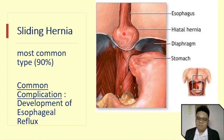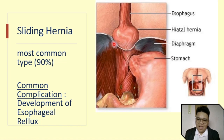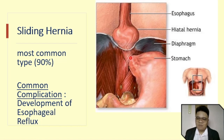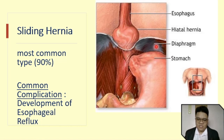The common complication for sliding hernia is the development of esophageal reflux. Because it is part of the stomach that went up, the lower esophageal sphincter remains in place, meaning the acid contents of that elevated portion could possibly go back to the esophagus, causing signs and symptoms such as those of GERD.